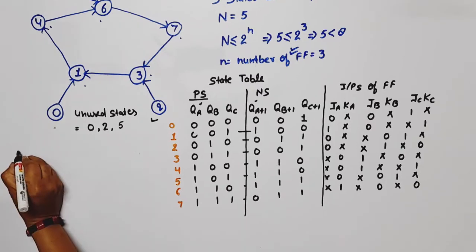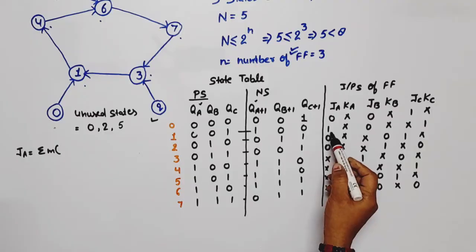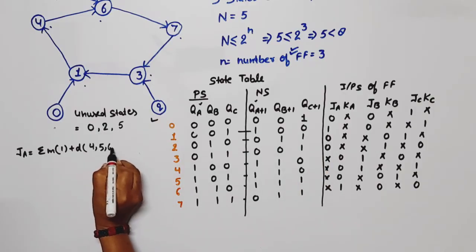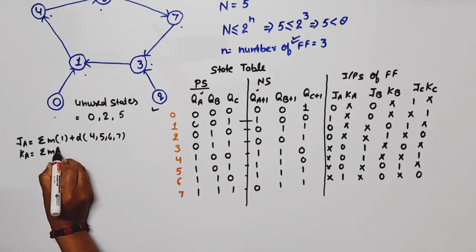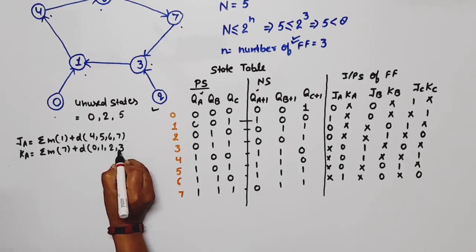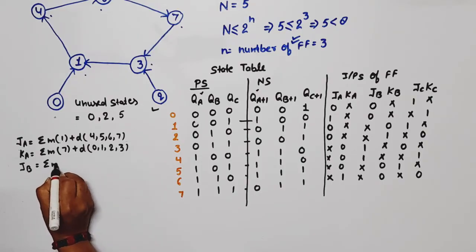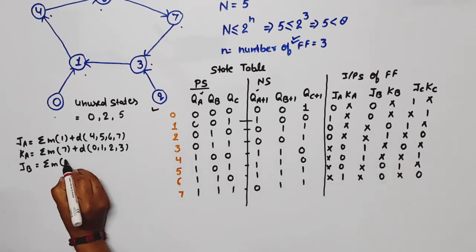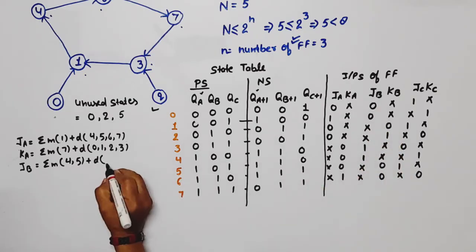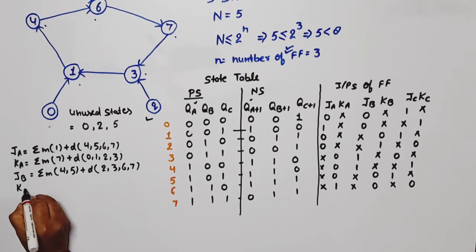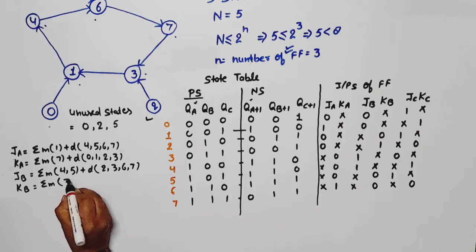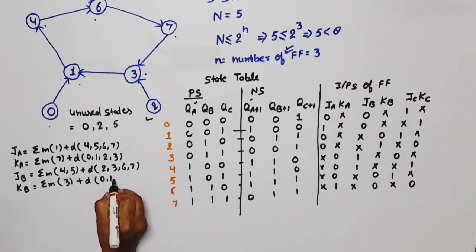For JB: summation of minterms at 4 and 5, plus don't care at 2, 3, 6, and 7. For KB: single minterm at 3, plus don't care at 0, 1, 4, and 5. For JC: minterms at 0, 2, and 6, plus don't care at 1, 3, 5, and 7. For KC: minterms at 1 and 5, plus don't care at 0, 2, 4, and 6.